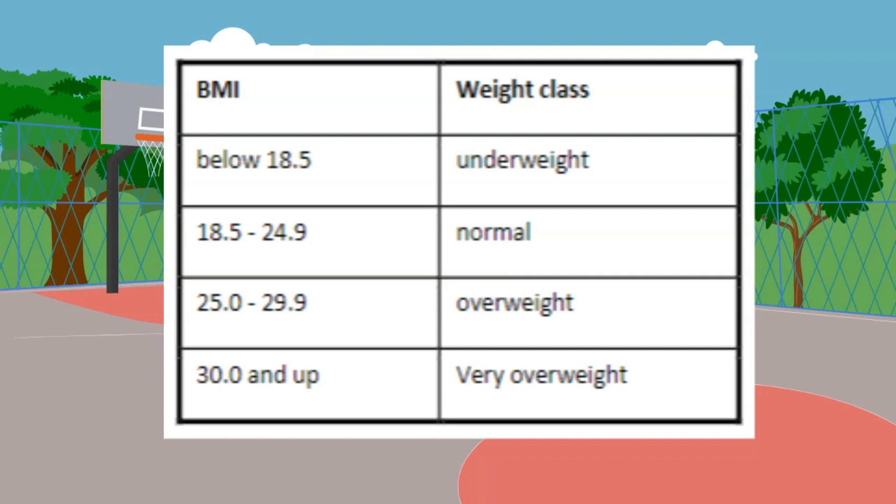If your BMI is at or between 18.5 to 24.9, you are considered normal, which means you only need to maintain your body weight. If your BMI is at or between 25.0 to 29.9, you are considered as overweight, which means you have to lose some weight.